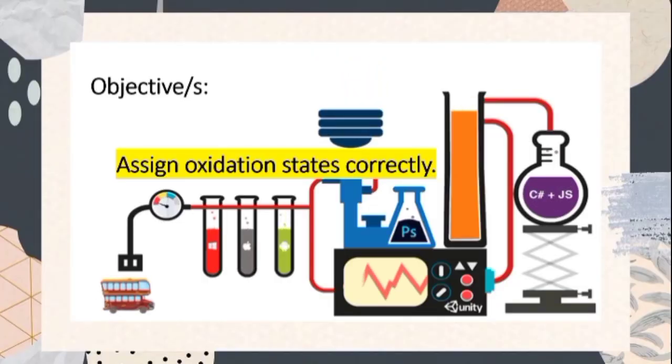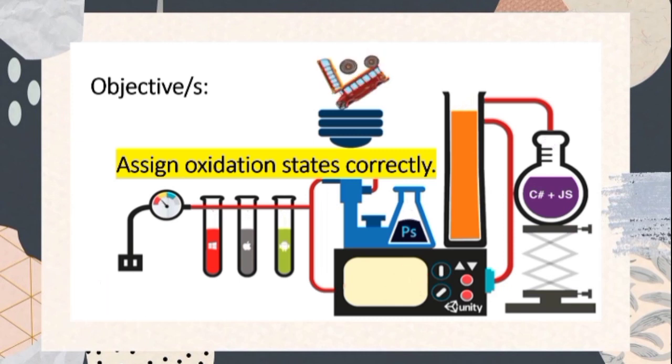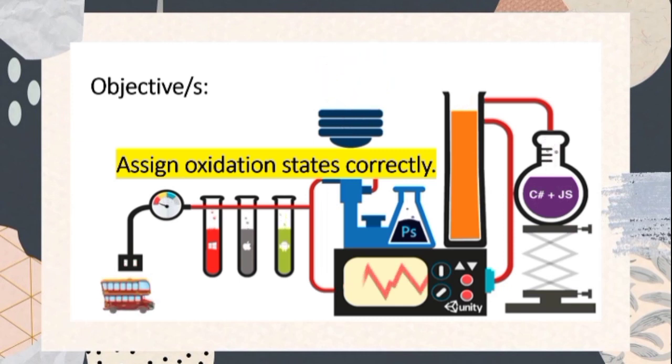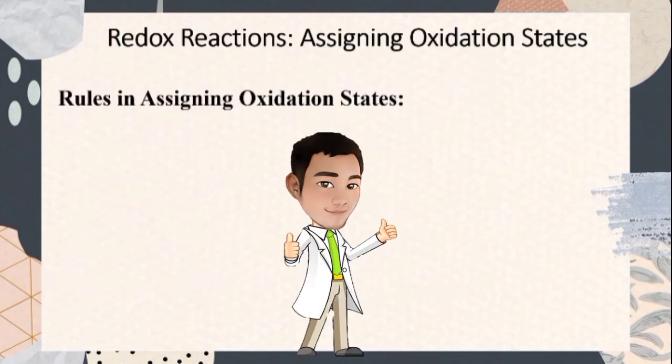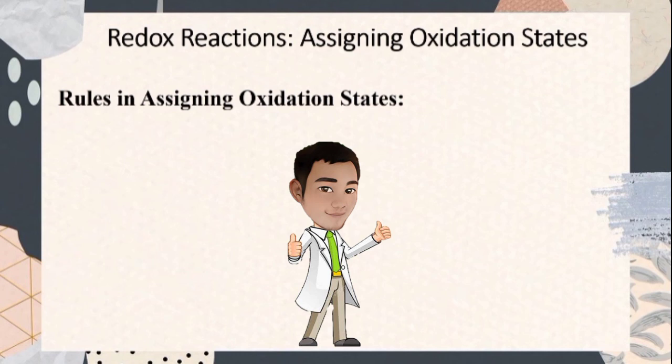After this video lesson, you are expected to assign oxidation states correctly. One way to balance redox reactions is by change in oxidation state method. Here are the rules in assigning correct oxidation states of elements.